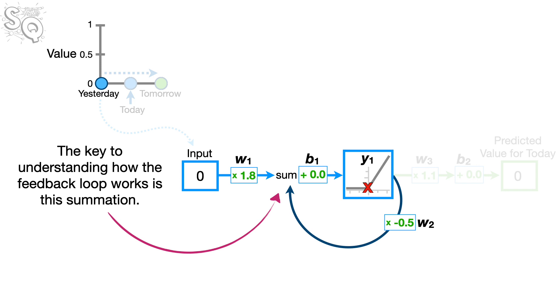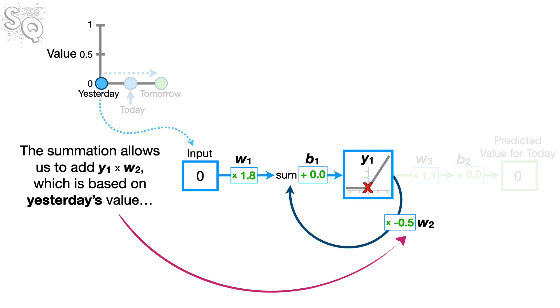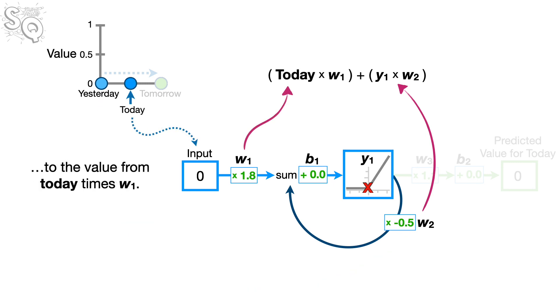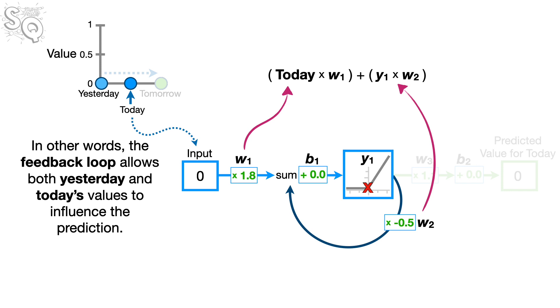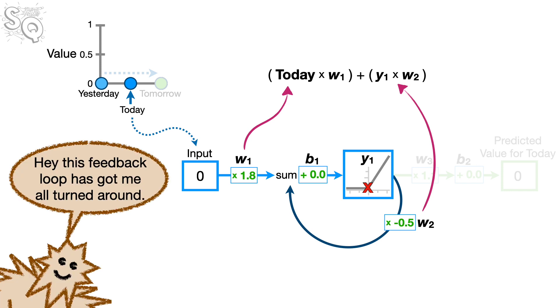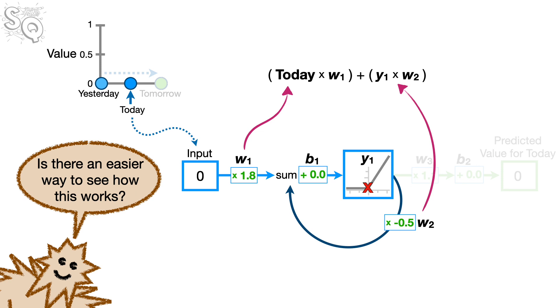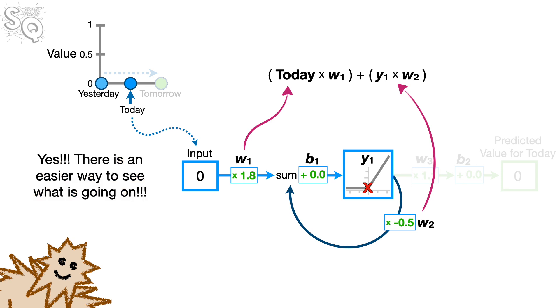The key to understanding how the feedback loop works is this summation. The summation allows us to add y sub 1 times w sub 2, which is based on yesterday's value, to the value from today times w sub 1. In other words, the feedback loop allows both yesterday and today's values to influence the prediction. Hey, this feedback loop has got me all turned around. Is there an easier way to see how this works? Yes, there's an easier way to see what's going on.